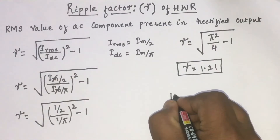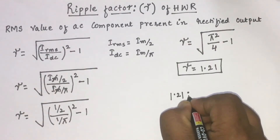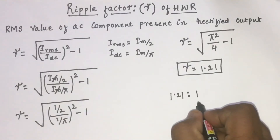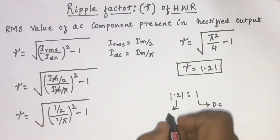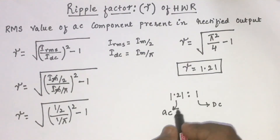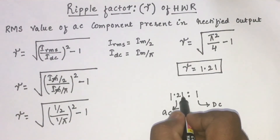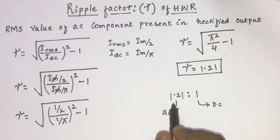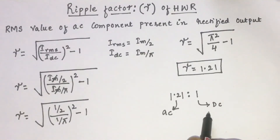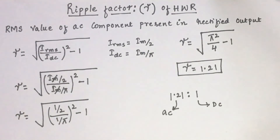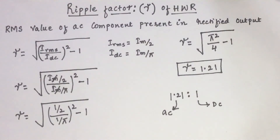This 1.21 means it is 1.21 to 1 — so for every DC component there is 1.21 times AC component, which is very high. In the rectified output there is 1.21 times AC component for each DC component. Hence this is one more disadvantage of a half wave rectifier, where the ripple factor is very high. Hope you have understood the topic, thank you.